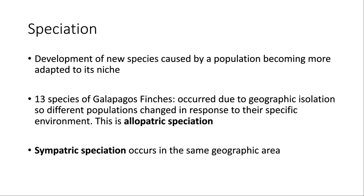Speciation is just the development of new species, and this comes after adaptations over time. Like the Galapagos finches — they all started from the same original finch, but based on their location on different islands with different environments, they adapted to those different environments. We ultimately wound up with 13 different species of finch on those islands. When speciation happens due to geographic isolation — like with those finches on separate islands — this is called allopatric speciation.